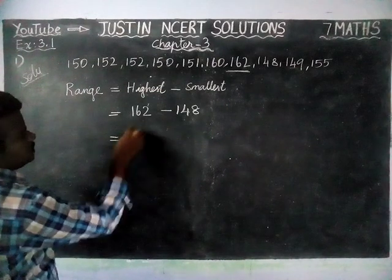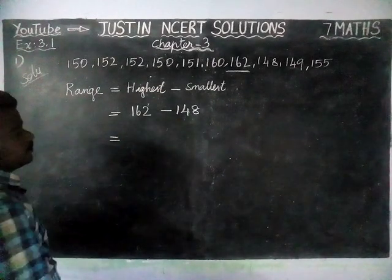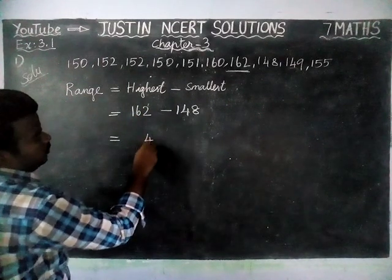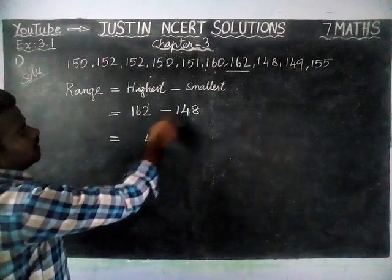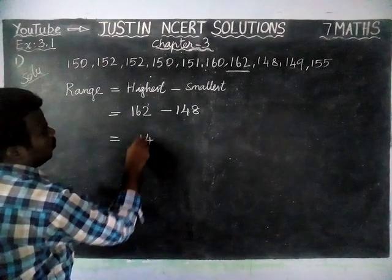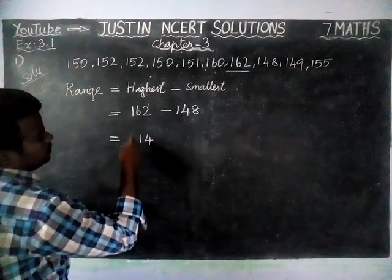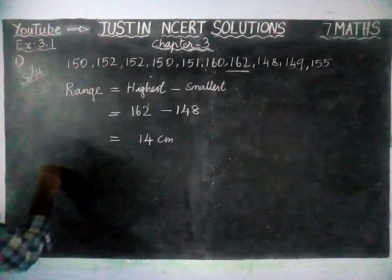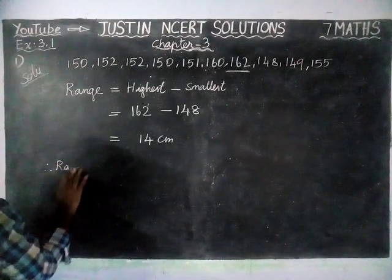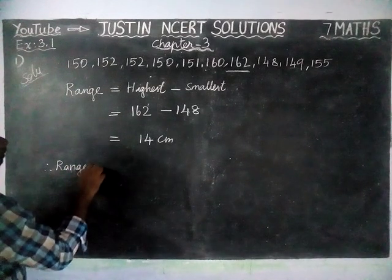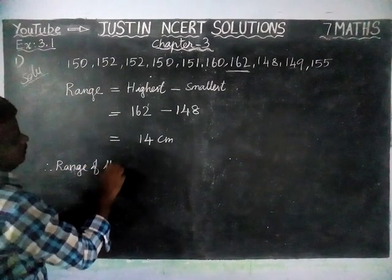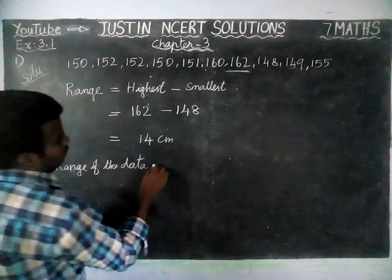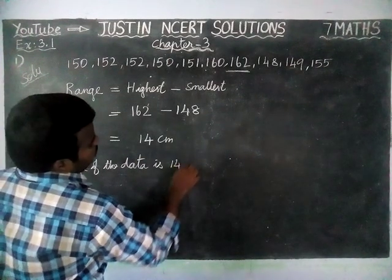Now the difference: 162 minus 148. When we subtract: 12 minus 8 is equal to 4; 5 minus 4 is equal to 1; and 1 minus 1 is equal to 0. So the result is 14 centimeters. Therefore, the range of the data is 14 centimeters.